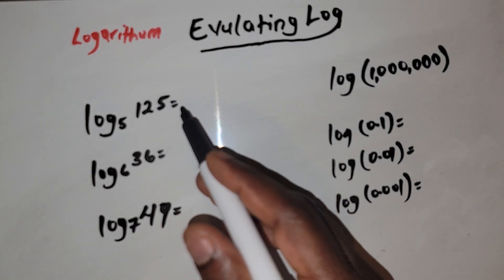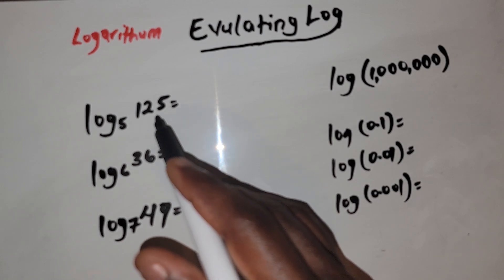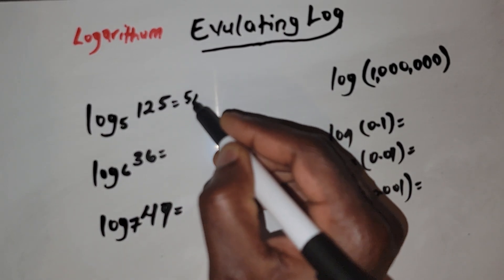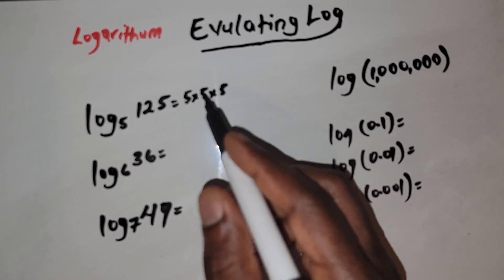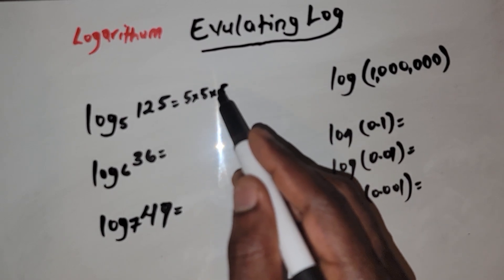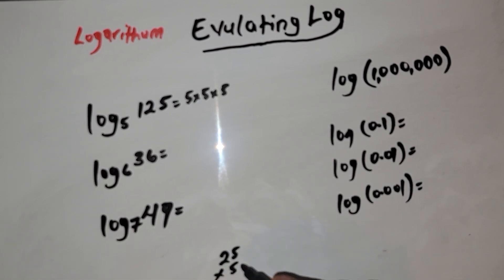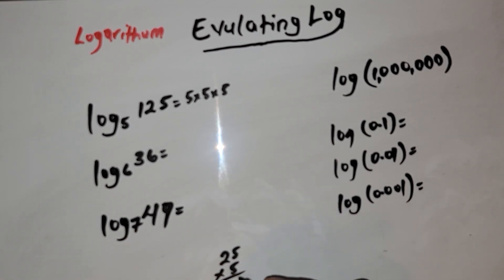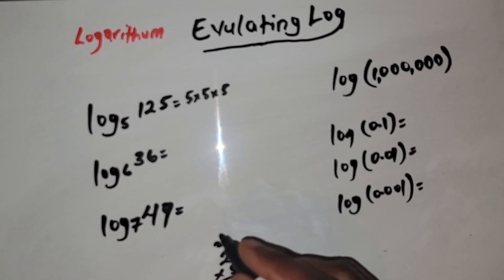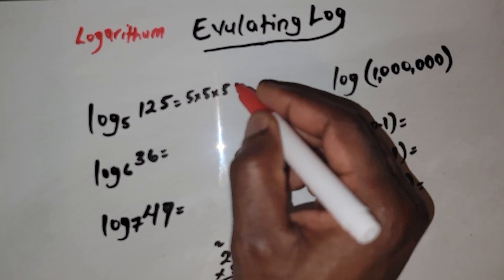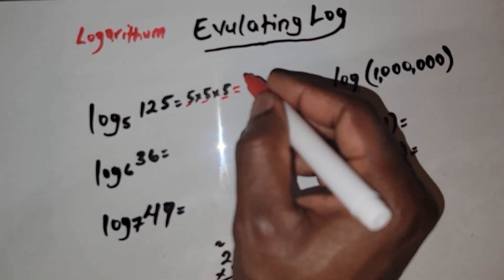Let's do a more complicated problem. Here you want to ask yourself: 5 raised to how many power is equal to 125? We have 5 times 5 times 5 — that's 25 times 5, which is 125. We count 1, 2, 3 — so the answer is going to be 3.